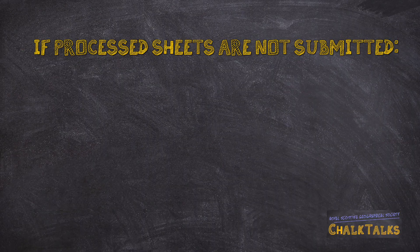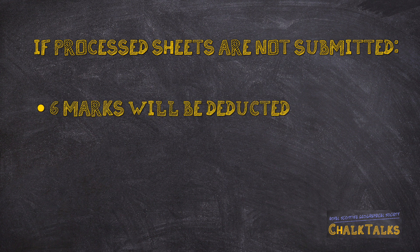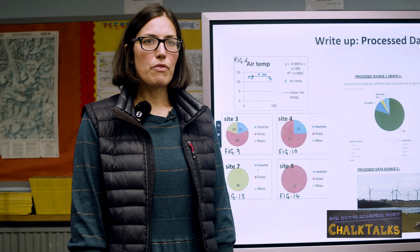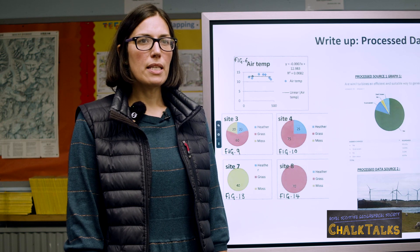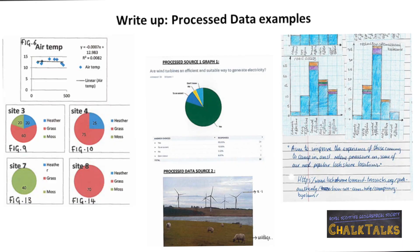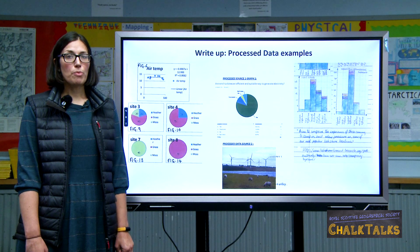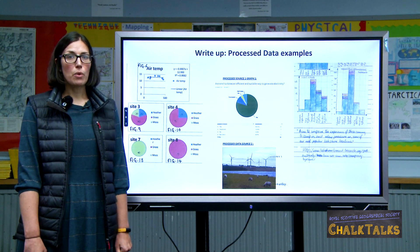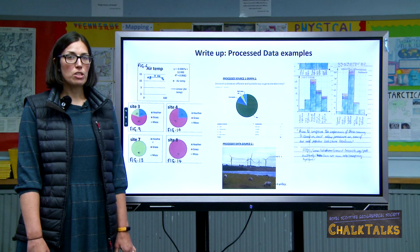Although the processed information sheets are not marked, there is a penalty of six marks if they are not submitted along with your write-up. These examples are taken from the Understanding Standards website — please note the variety of techniques used and how the candidates have referenced each element. It is also acceptable to hand-draw or computer-generate your processed data. Remember, if you have used any websites or other sources, please mark the source on your processed information sheet.